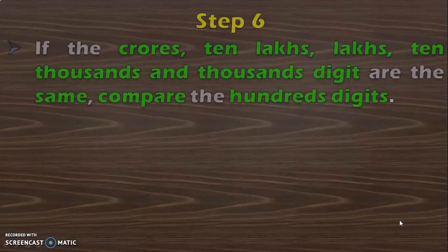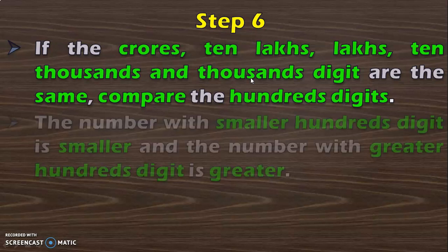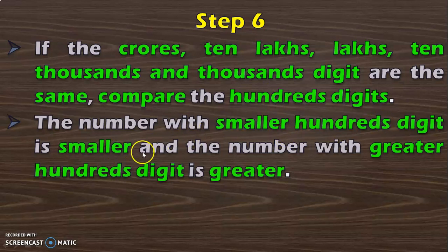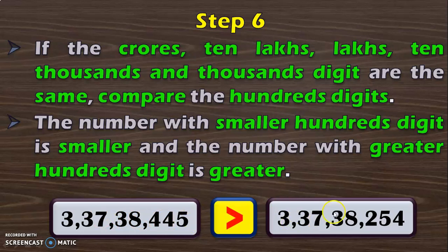Let us see the next case where you have the crore's, 10 lakhs, lakhs, and 10,000th digit to be the same. So next we will have to move to the next lower place value which is the hundredth digit. The number with smaller hundredth digit is smaller and the number with greater hundredth digit is greater. Consider this example where you have crore's, 10 lakhs, lakhs, 10,000th and thousandth digit to be the same. Next you compare the hundredth digit where you have 4 and 2. We know that 4 is greater than 2, and you conclude that 3 crore 37,38,445 is greater than 3 crore 37,38,254.